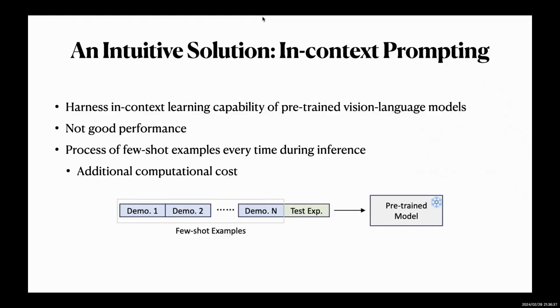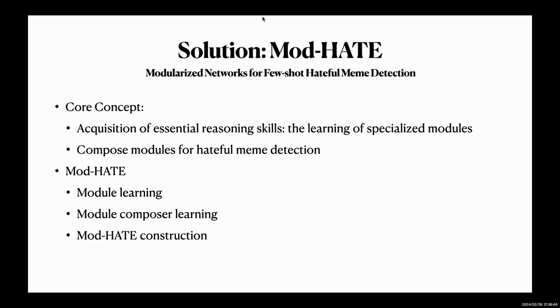Besides, it calls for the process of few-shot examples every time during inference, so there is additional computational cost. We solved the limitations mentioned above by proposing MOD-HATE, the modularized networks for few-shot hateful meme detection.